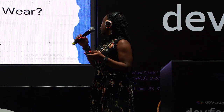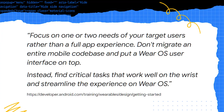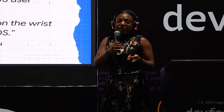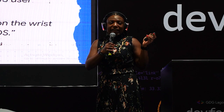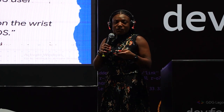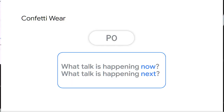We've seen all of that on a proper phone app, but which features can we translate to a comfortable Wear OS app? The official developer.android.com guidelines for wearables say: focus on one or two needs, don't carry the full app over to Wear, build for a small surface, choose one or two critical tasks that work on the wrist, and streamline the experience — don't just copy and paste everything into a Wear app.